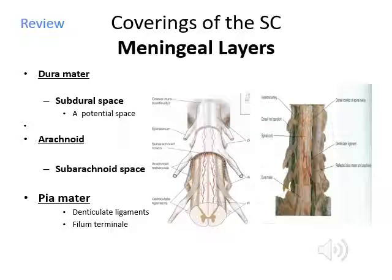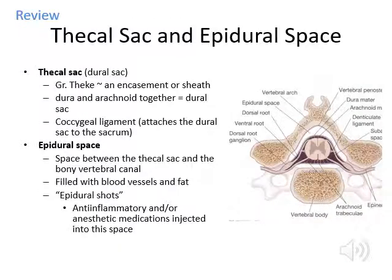The pia mater has extensions called the denticulate ligament and the filum terminale. The dura mater and arachnoid together form the dural sac. The epidural space is between the dural sac and the bony vertebral column, filled with fat and blood vessels. A physician injects an anti-inflammatory into that epidural space — that's your epidural shot — and the anesthetic gets absorbed by the blood vessels there.